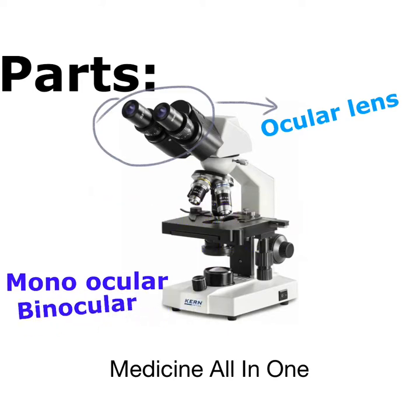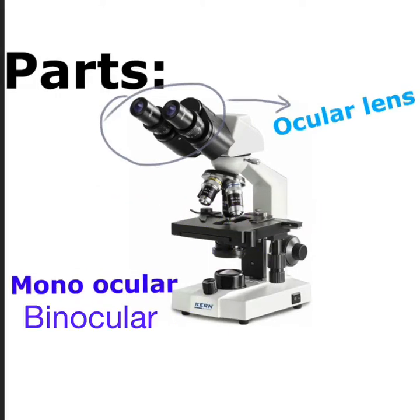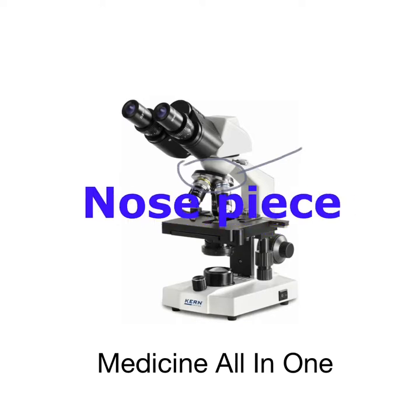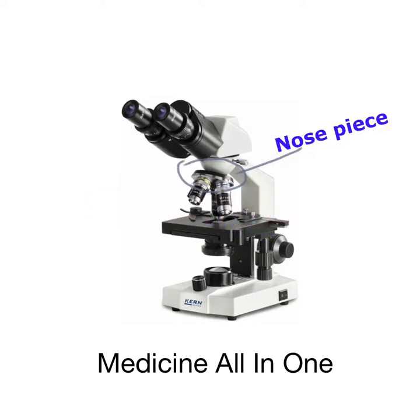A microscope that contains two eyepieces is known as binocular. The next part of the microscope is the nosepiece. The nosepiece consists of different objective lenses with different magnification powers.